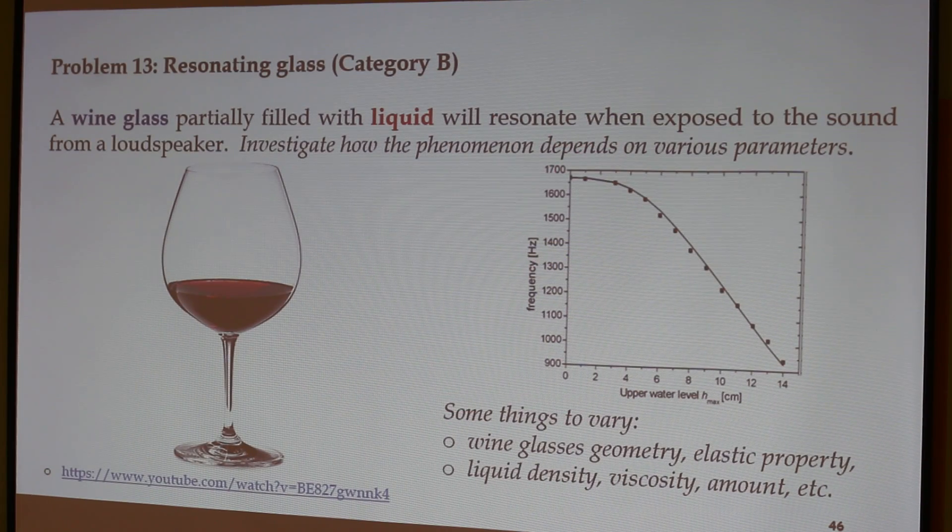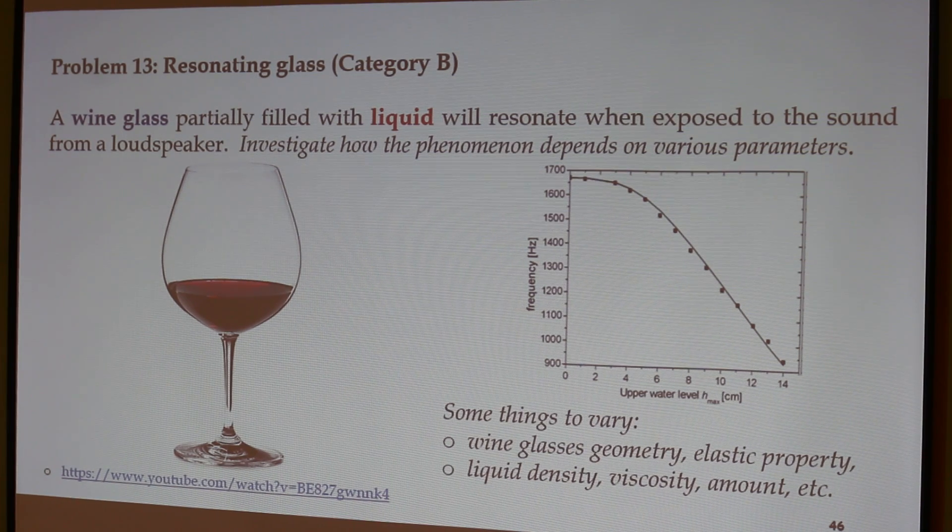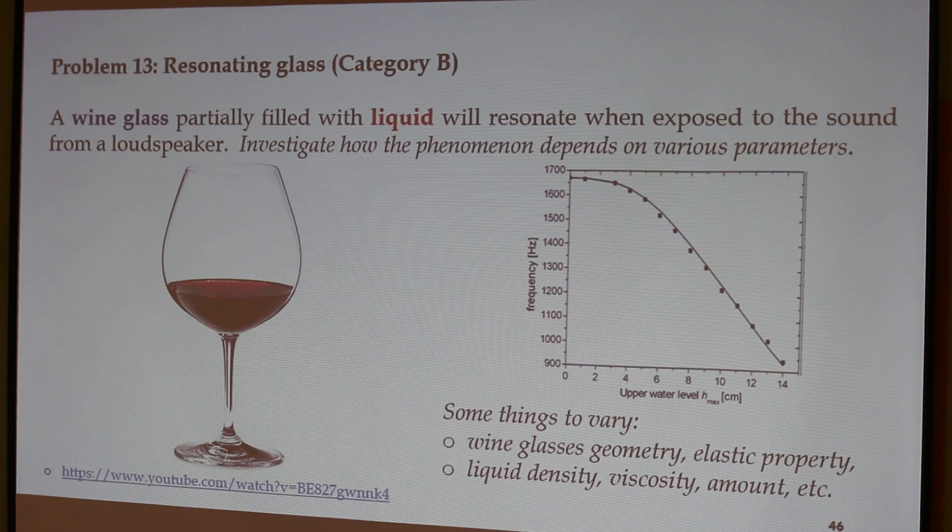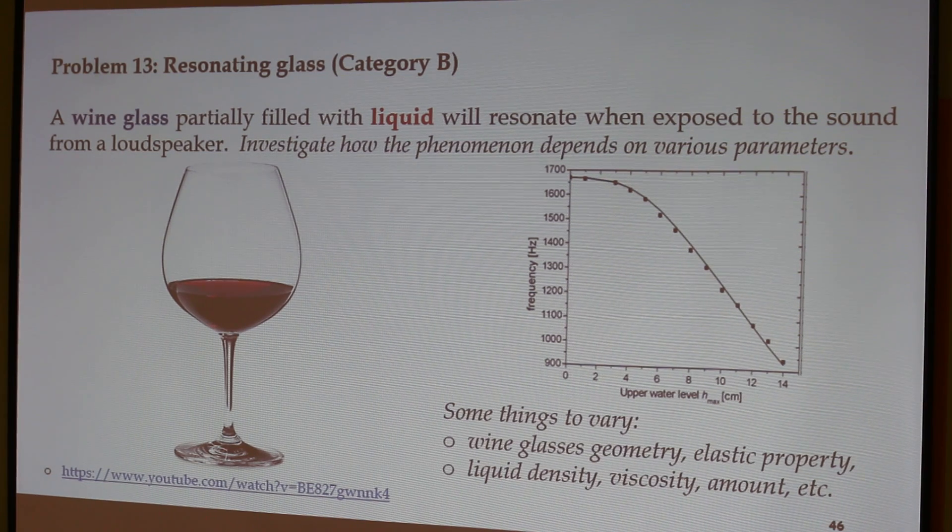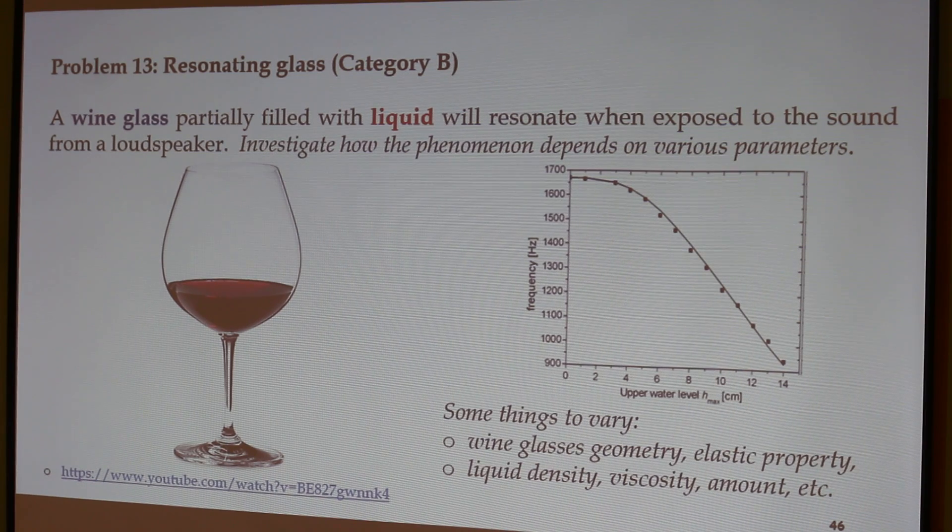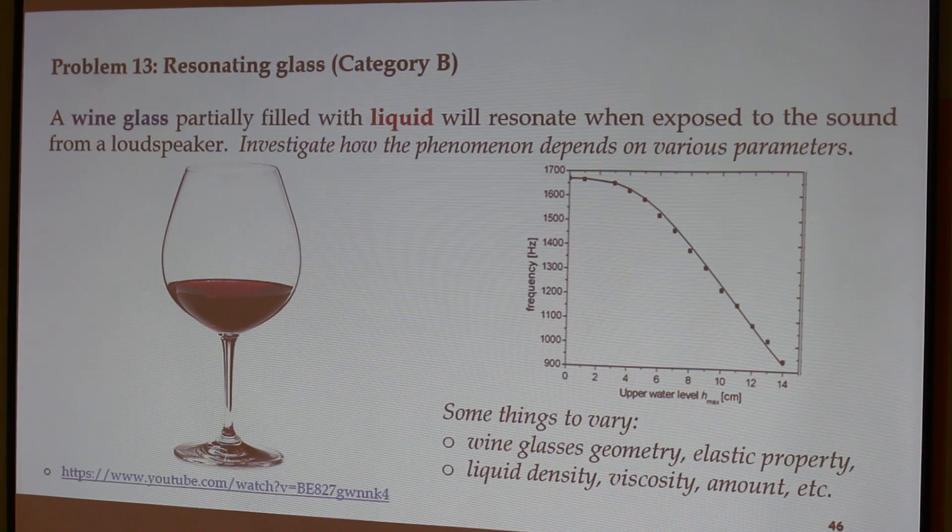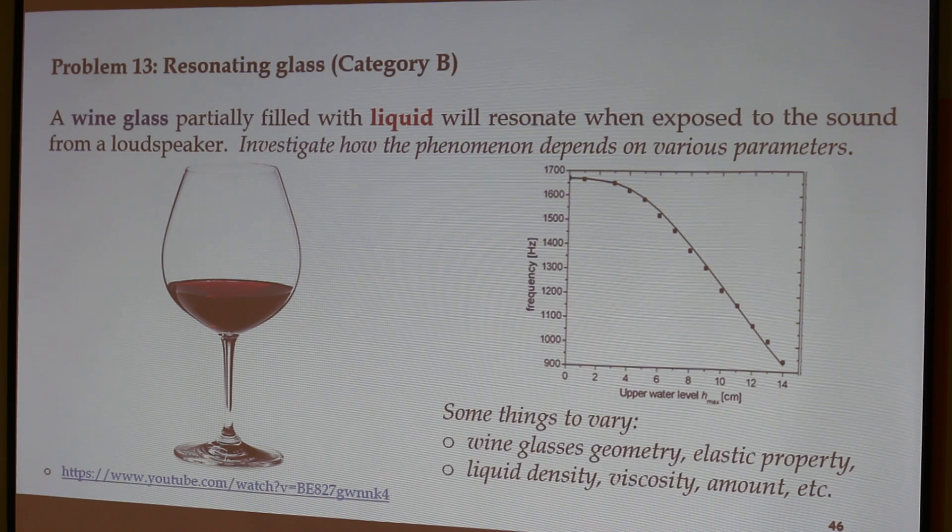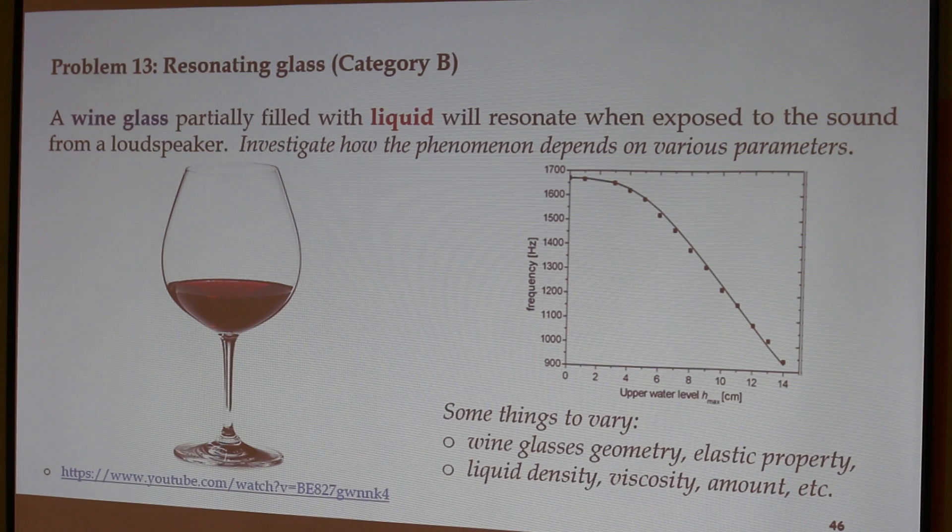So Category A, don't complain, you have two problems that you can solve quite completely. And then you have the interesting Leidenfrost and then the magnetic hysteresis, and the spiral waves. Five problems so far.